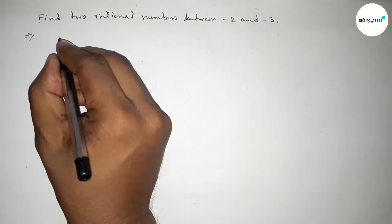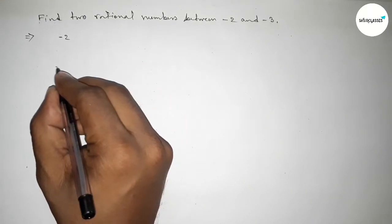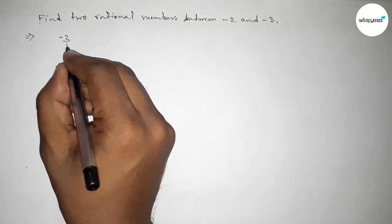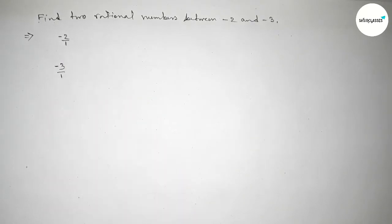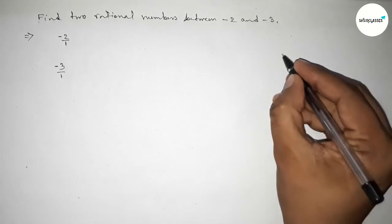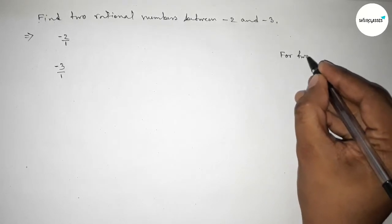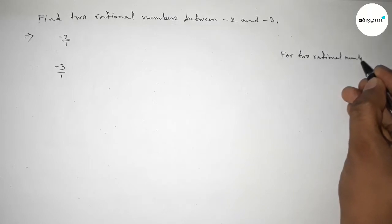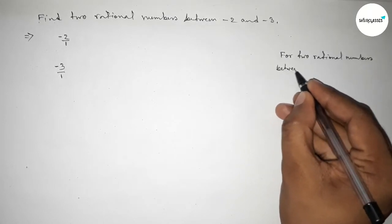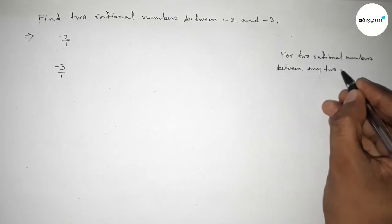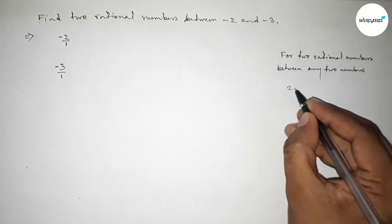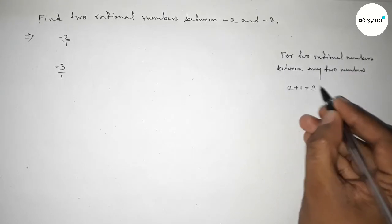So here minus 2 and here minus 3. Now we can write minus 2 as minus 2 over 1, and minus 3 as minus 3 over 1. Now discussing here an important method: for finding two rational numbers between any two numbers, we have to follow this method — we should multiply both numbers by 2 plus 1, equal to 3.